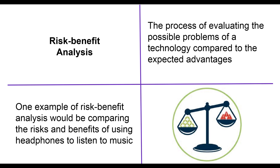The first word we have is our only 4.3 word, and that's risk-benefit analysis. So that means every other word outside of this one is going to be a part of your 4.4 vocabulary. Risk-benefit analysis is the process of evaluating the possible problems of a technology compared to the expected advantages.